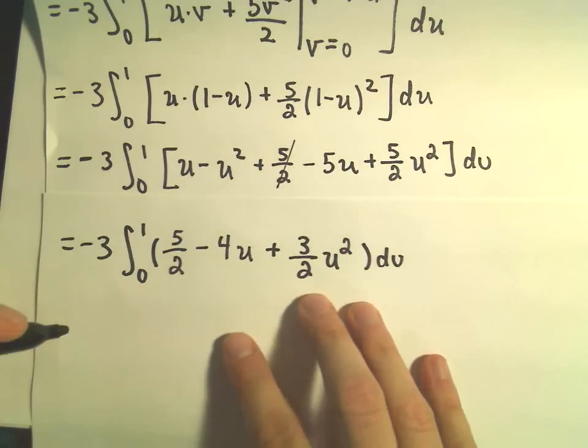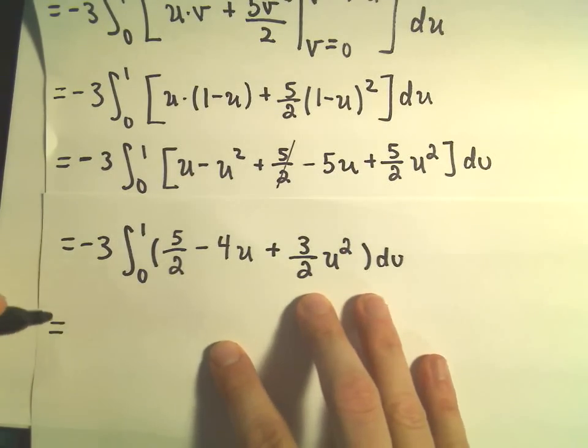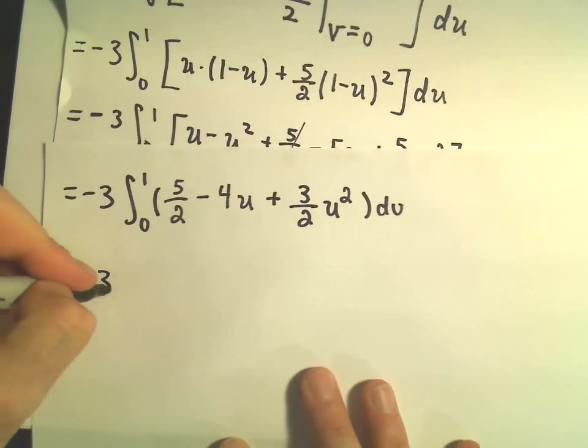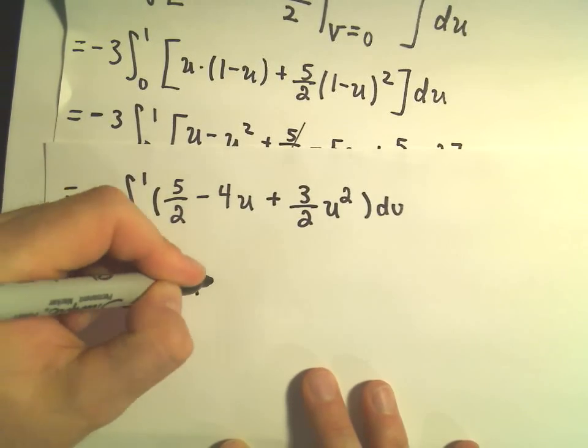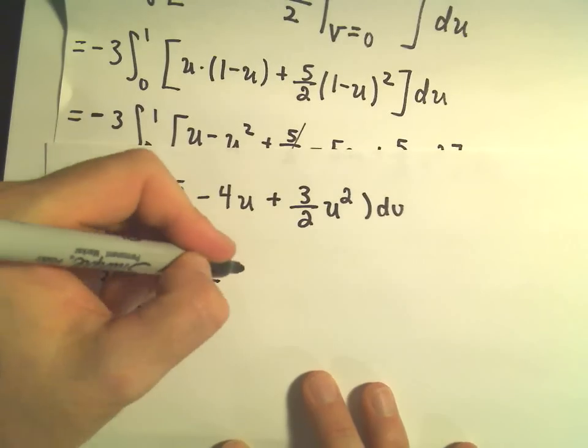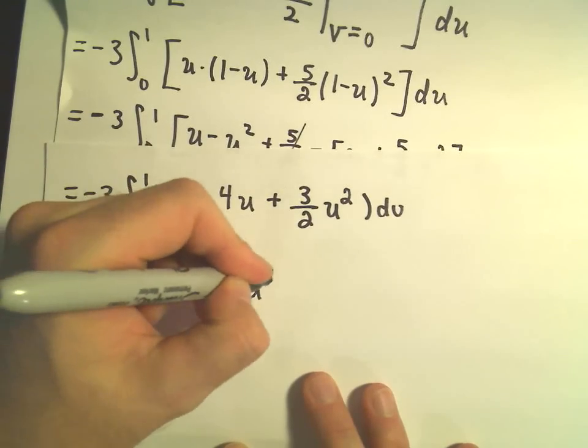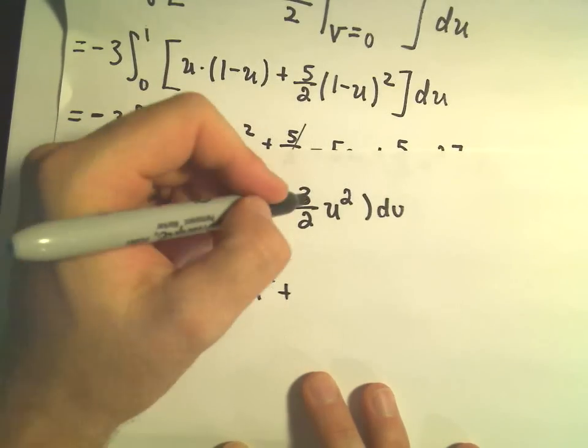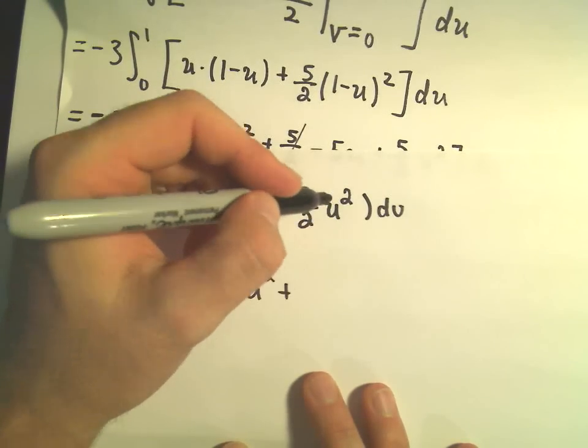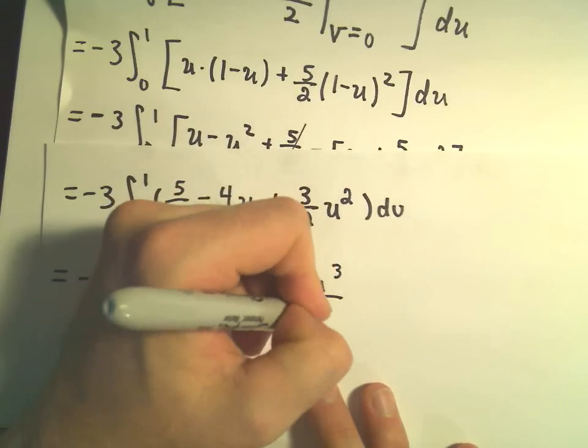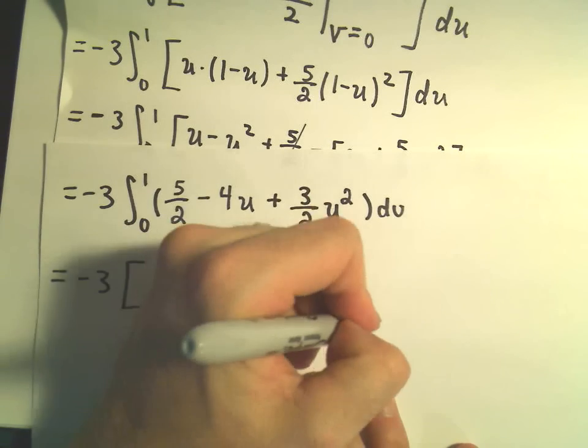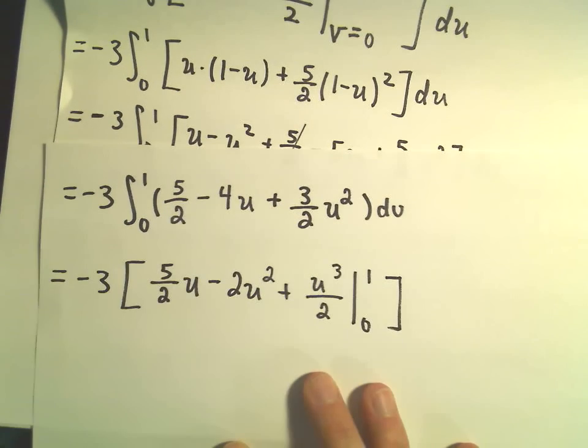And again, this is now what I'm going to integrate with respect to u. So we've got negative 3, our 5 halves will turn into 5 halves u. We'll get 4u squared over 2, or negative 2u squared. It looks like we would get u cubed over 3, but the 3s would cancel, so it looks like we would have u cubed over 2 left over, again evaluating that from 0 to 1.